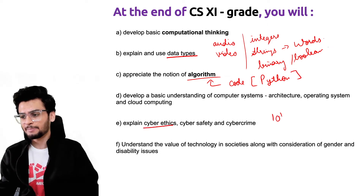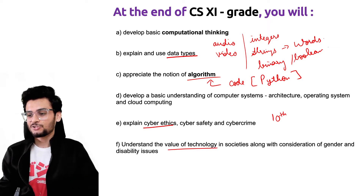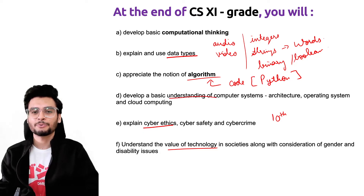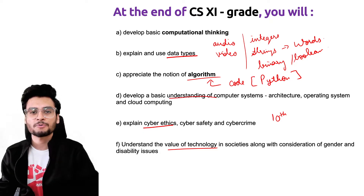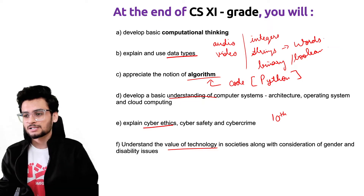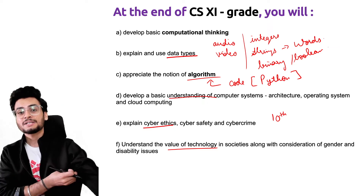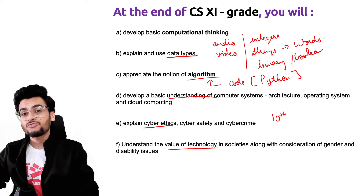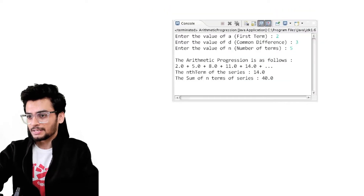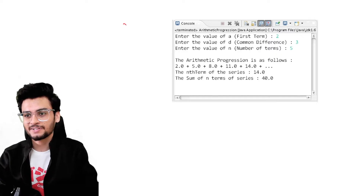Cyber ethics was something you already covered in 10th grade — the value of technology in societies. We will also develop a basic understanding of computer systems, such as different types of hardware: monitor, CPU, RAM, processors, etc. After finishing 11th grade and moving to 12th grade, you'll have a solid foundation in all these areas.